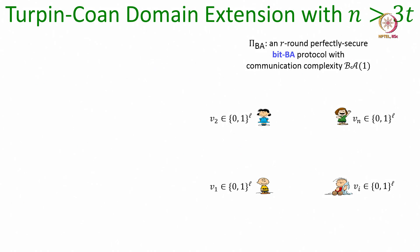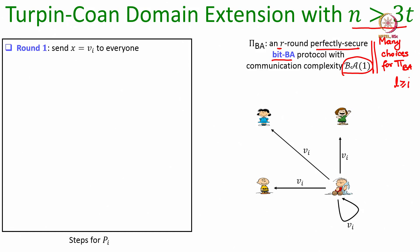Here is the Turpin-Cone domain extension with n greater than 3T. We assume we have an already existing bit BA protocol π_BA which takes R rounds, is perfectly secure, and has a given communication complexity. You have choices for π_BA: you can use the EIG protocol or the Phase King 2 protocol. We want to design a BA protocol where parties' inputs are binary strings of length L bits, with the existing bit BA protocol invoked only a constant number of times — in fact, in Turpin-Cone it is invoked only once.